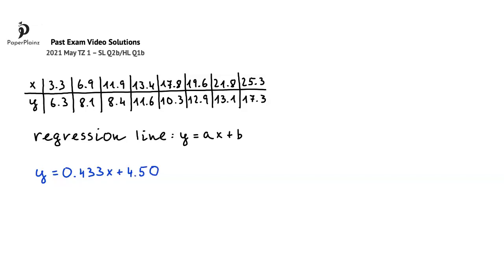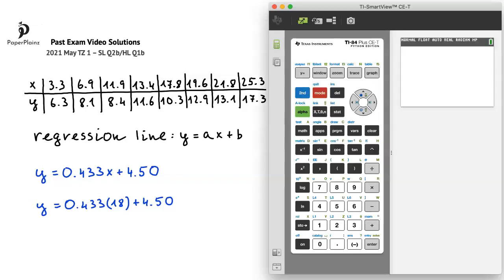All we have to do now is to substitute 18 for x, which gives us that y is equal to 0.433 times 18 plus 4.50. Let's carry out this calculation. Entering 0.433 times 18 plus 4.5 and pressing enter gives us 12.294.